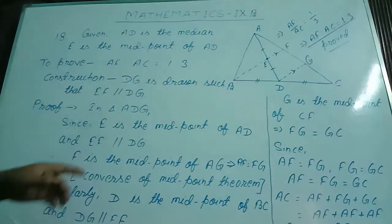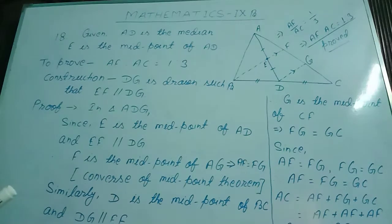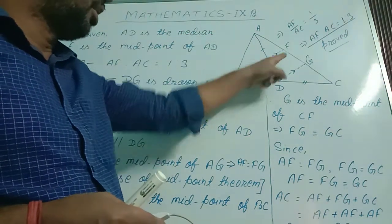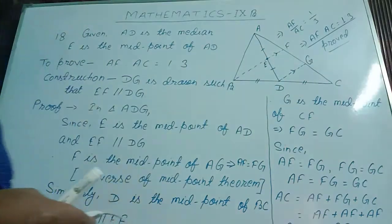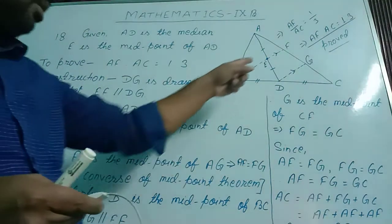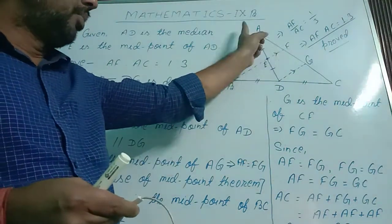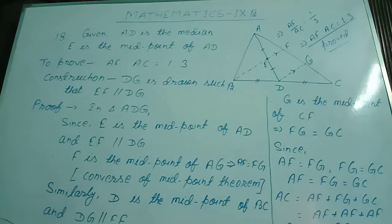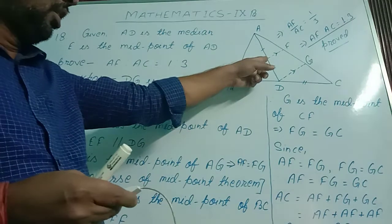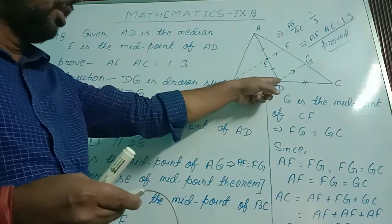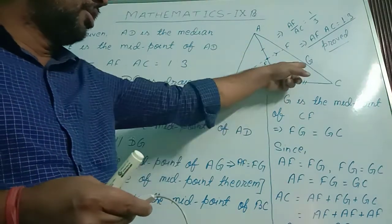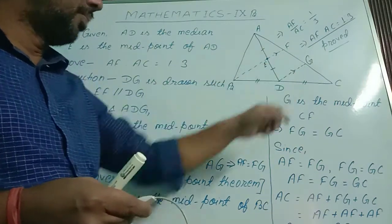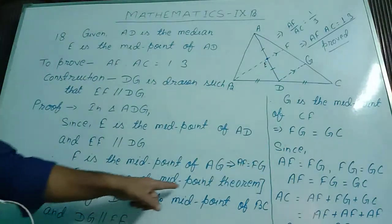Now we consider triangle ADG. In triangle ADG, E is the midpoint of AD and EF is parallel to DG from construction. So F is also the midpoint of AG from the converse of the midpoint theorem. E is the midpoint of AD and EF is parallel to DG, therefore F is also the midpoint of AG from the converse of midpoint theorem.